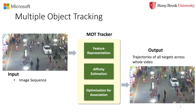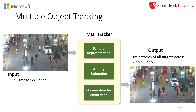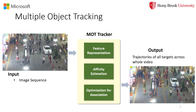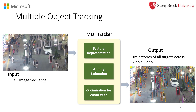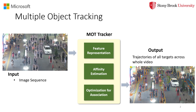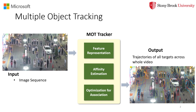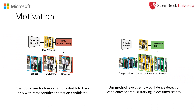For people not familiar with MOT, MOT is the task to find the moving trajectories of multiple targets in a video. Traditional MOT methods use strict thresholds to filter the outputs from the detection network to only track the most competent detection candidates for better efficiency and lower false positive rates.